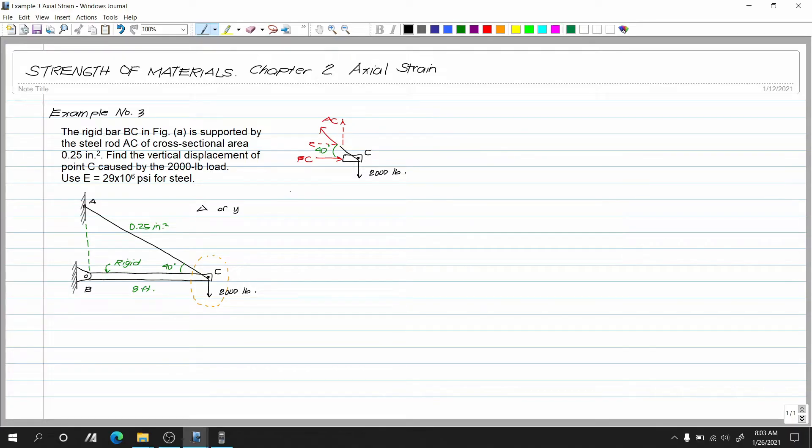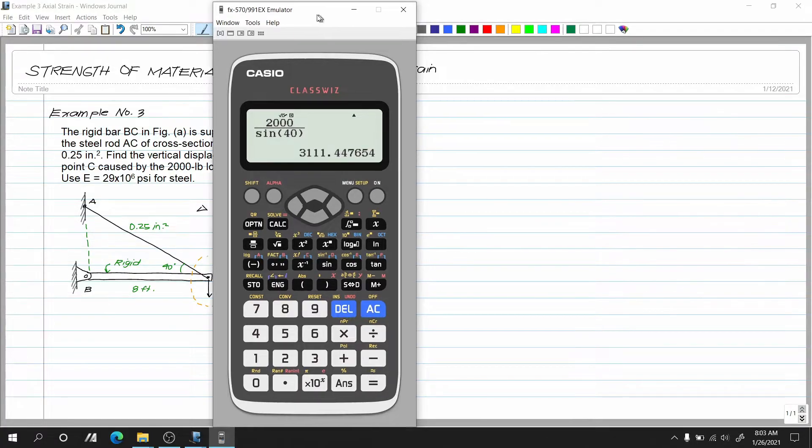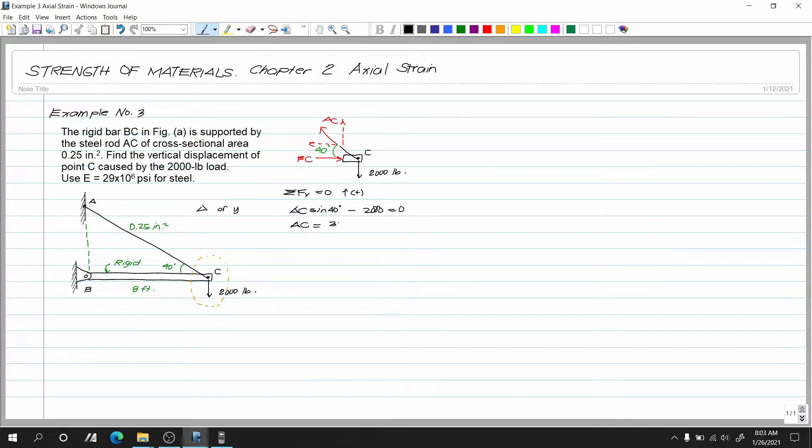Which is agad natin ma-solve sa summation of forces vertical. Kasi isa lang sya na vertical force na unknown. So mag-summation of forces vertical na lang tayo. Summation of forces vertical is equals to zero. Upward is positive. So AC multiplied by sin of 40 degrees minus 2,000 is equals to zero. So AC is equals to 2,000 divided by sin of 40. Ayan. So 3,110.44 pounds. Dito yung ating AC. Nagagamit natin para sa deformation ng ating cable AC.